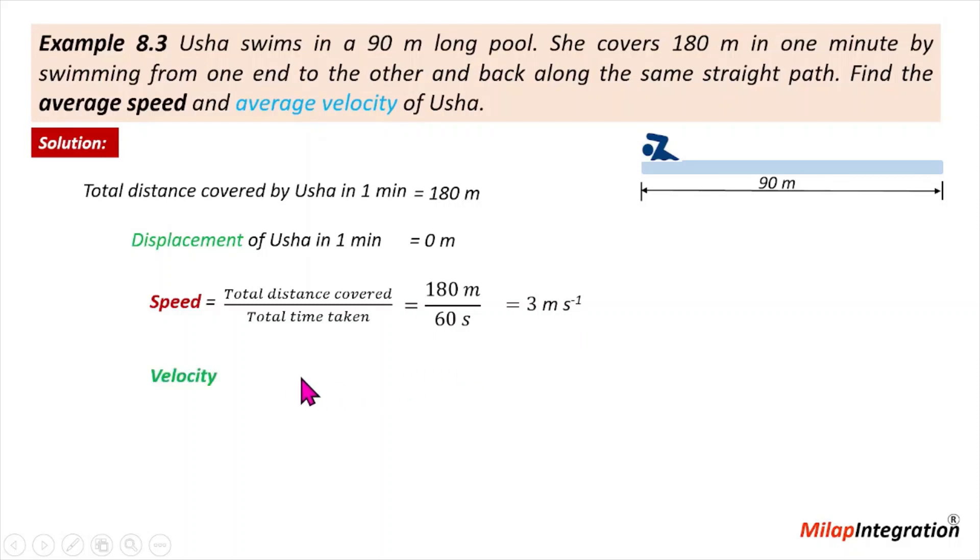Same way, displacement: total displacement upon total time, 0 upon 60. The answer is 0, 0 meters per second. That means velocity is 0, but speed is 3 meters per second.